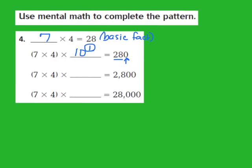Let's take a look at the next step in the pattern. They give me 7 times 4 times blank equals 2,800. I'm missing my power of 10. The basic fact is 28, and when I look at my product of 2,800, I see there are two 0s behind the 28. So I'm going to write down the second power of 10, because my exponent should match the number of 0s — I count 1, 2, so I'm on the right track.